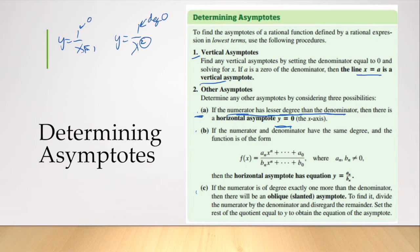But that's not going to be the case for everything. If the numerator and denominator have the same degree, and the function is of this form, then the horizontal asymptote has the equation y equals an over b. You take the leading coefficients.